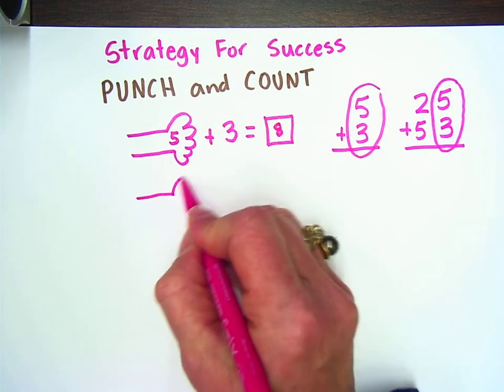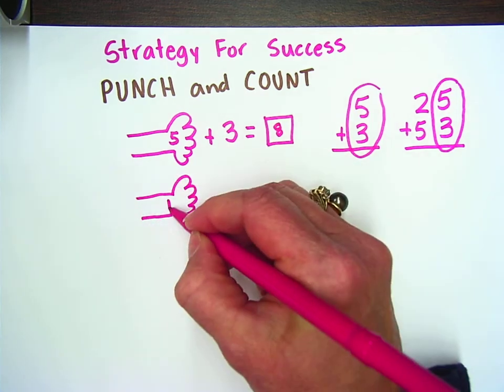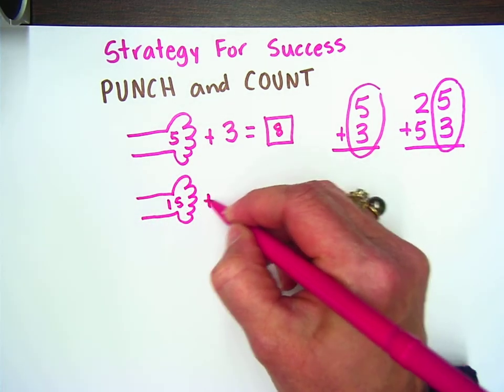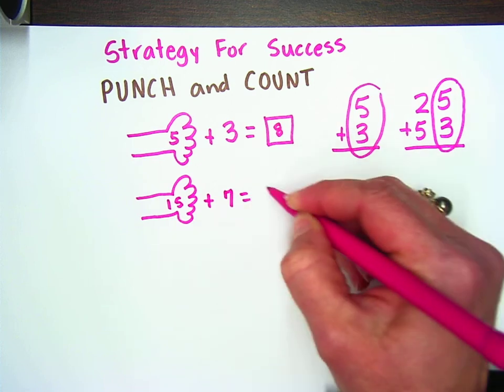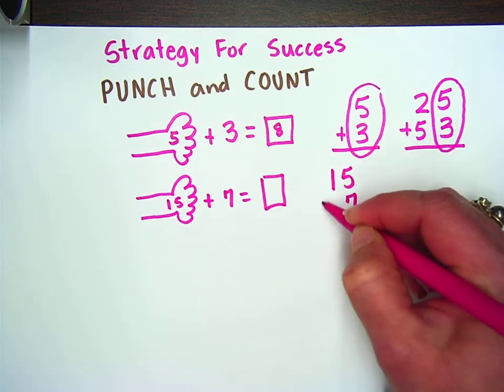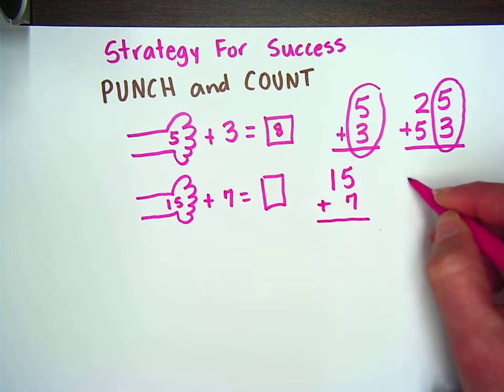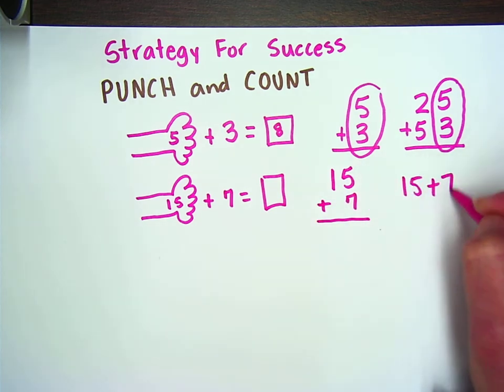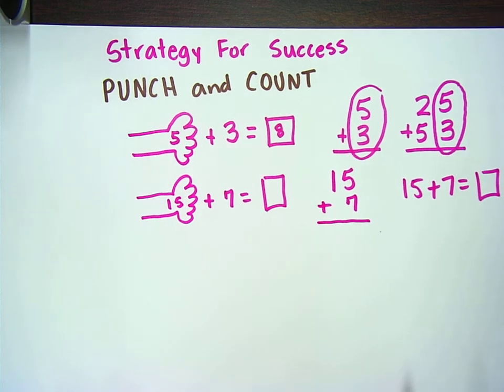This also works on really big numbers. Let's say I have fifteen plus seven. And again, you might see fifteen plus seven written like this. You might have it written like this. And you need to get the answer very quickly, and you want to get it accurately.